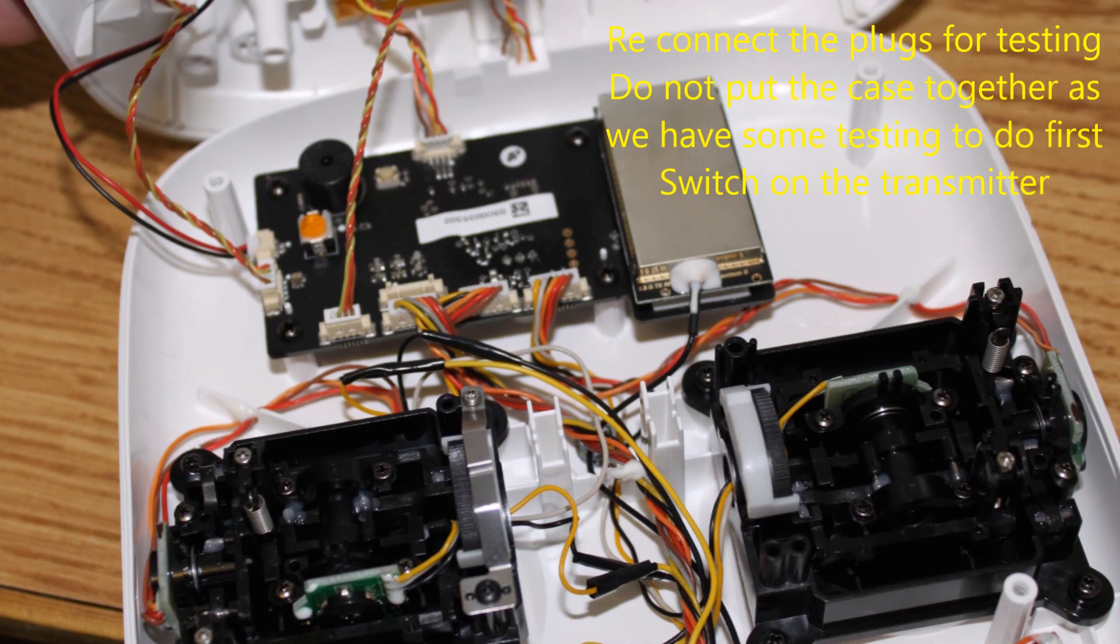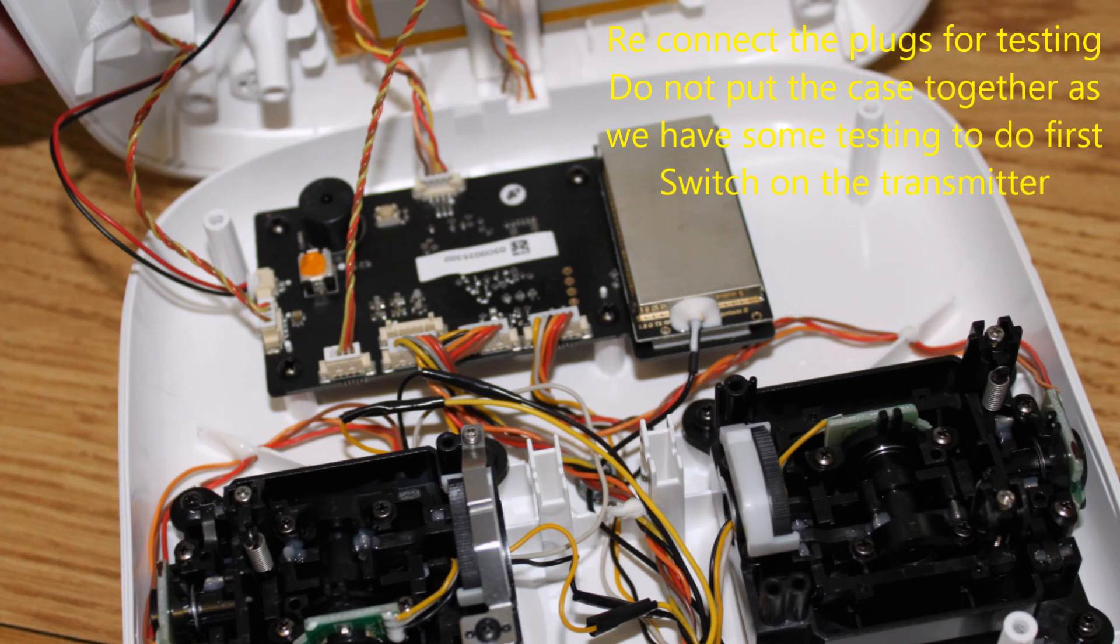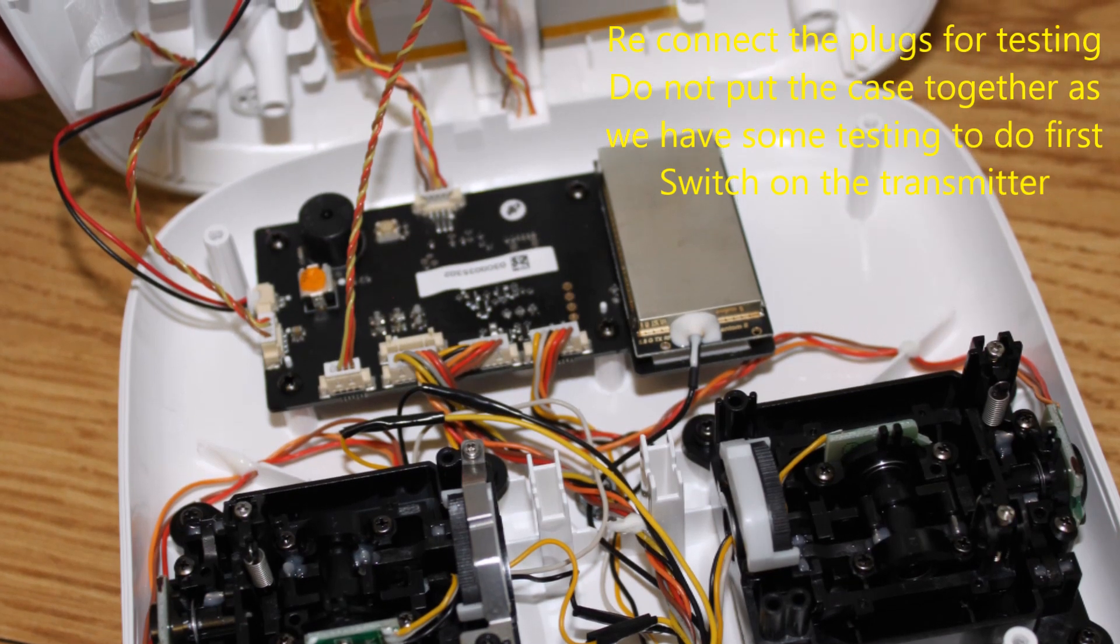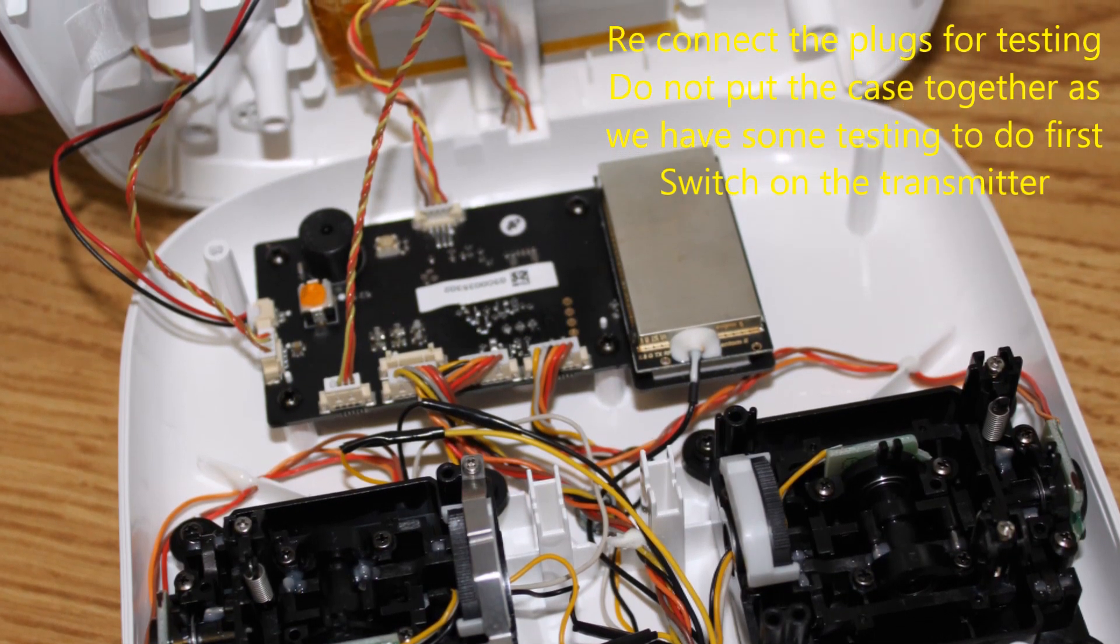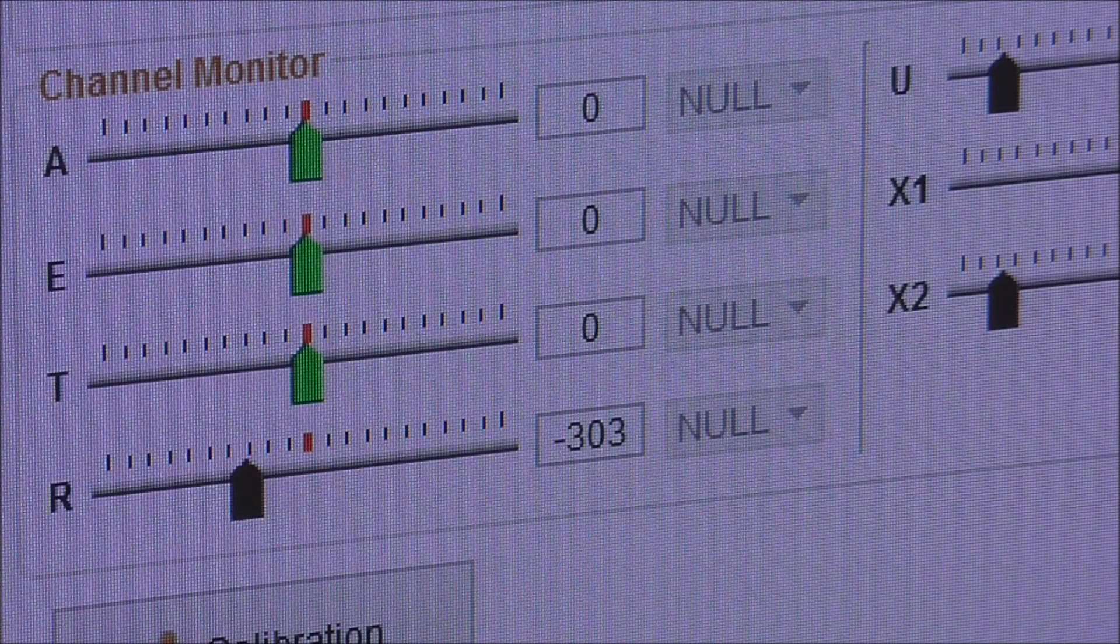Reconnect the plugs for testing. Do not put the case together as we have some testing to do first. Now switch on the transmitter. Using the USB lead connect it to the computer and start up the RC assistant software.